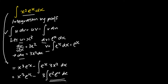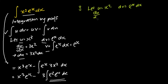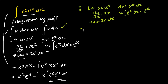Then I work out the integration by parts for the integration of x squared e to the power of x. I let u be equals to x squared and my dv be equals to e to the power of x dx. So to find my du, I take u with respect to x, I get 2x, in which multiplying both sides by dx, I get du is equals to 2x dx. My v is the integral of e to the power of x dx, which is e to the power of x.